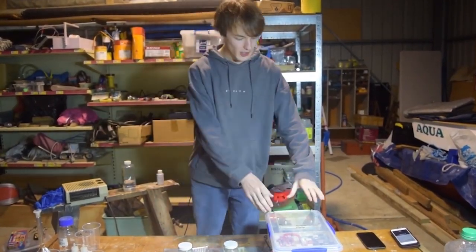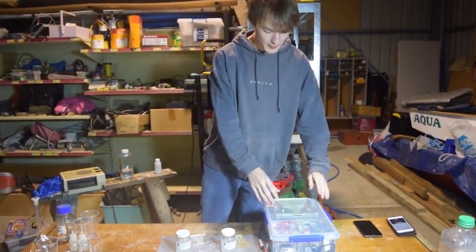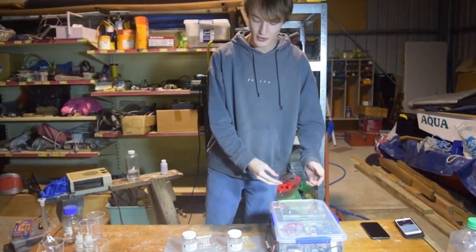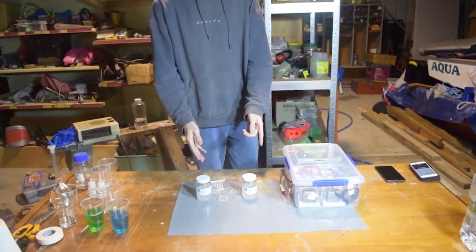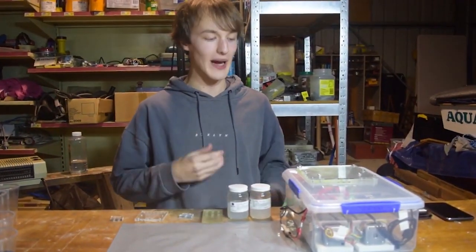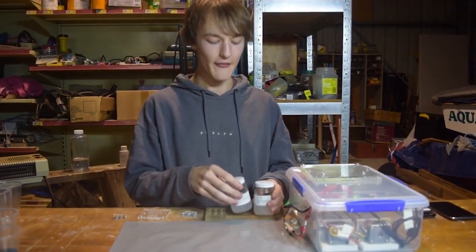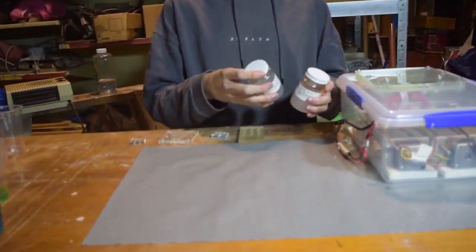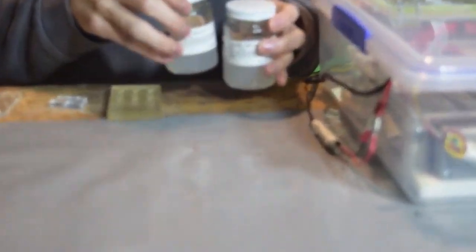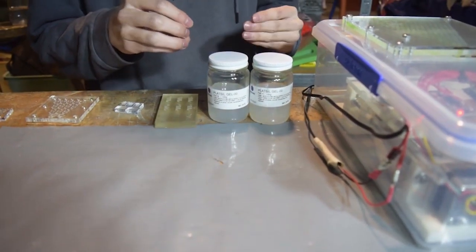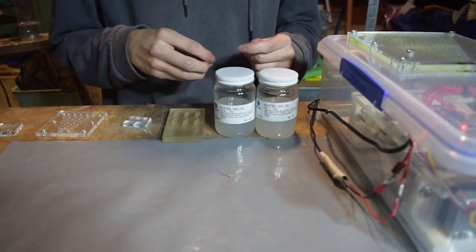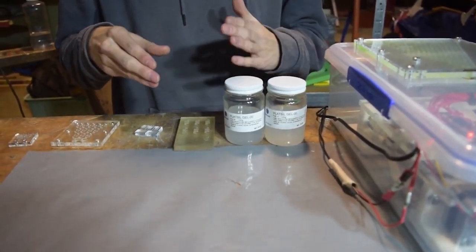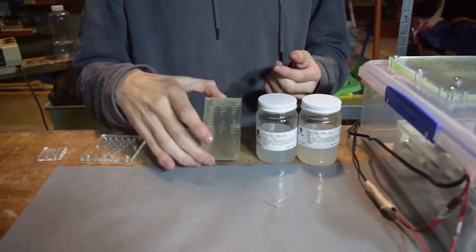So before we go and actually do a proper titration with this and explain how it can actually be used for a titration, we thought we'd go over all of our prototype designs. So we knew we needed to make microfluidics and our first design involved this silicon gel. We had a few tests with that and we realized that bubbles and low resolution just wouldn't let that work. So we scrapped that idea and moved on to 3D printing.